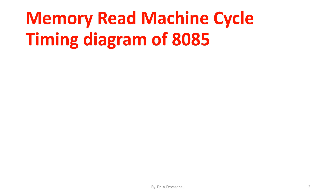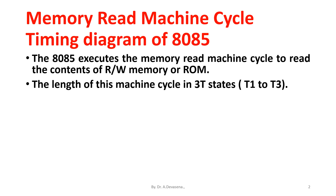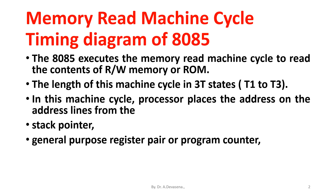The memory read machine cycle timing diagram of the 8085 microprocessor: the 8085 executes the memory read machine cycle to read the contents of RAM, ROM, or rewrite memory. The length of this machine cycle is three T states, that is from T1 to T3. In this machine cycle, the processor places the address on the address lines from the stack pointer, general purpose register pair, or program counter.